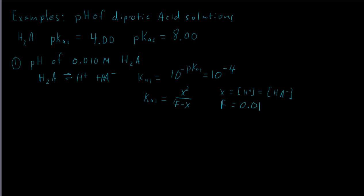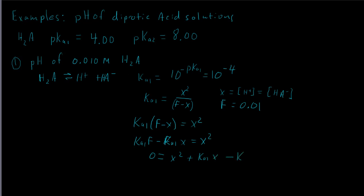Multiplying both sides by the denominator, we get Ka1 times (F minus x) equals x squared. Distributing Ka1 through the parentheses gives Ka1·F minus Ka1·x equals x squared. Moving everything to the right-hand side: 0 equals x squared plus Ka1·x minus Ka1·F. This is in quadratic form: a constant times x squared plus another constant times x plus a third constant equals zero.